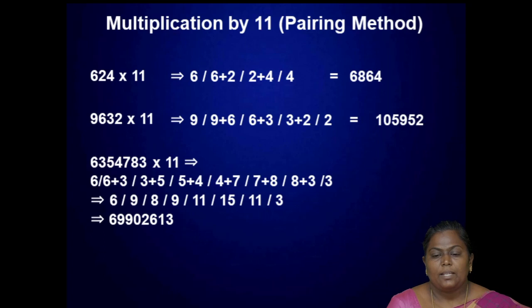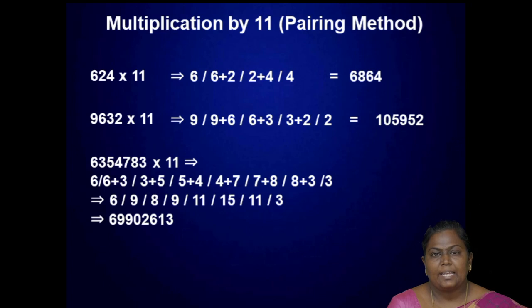When a pair sum exceeds 9, add 1 to the previous digit. So for 6357483 into 11, handling the carry-overs we get 69902613.